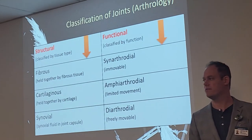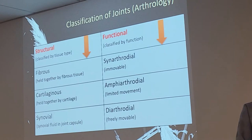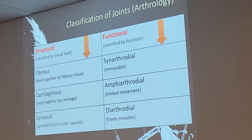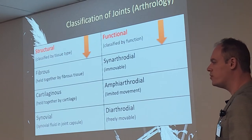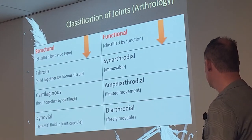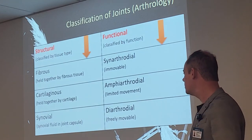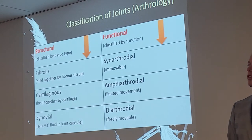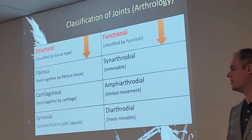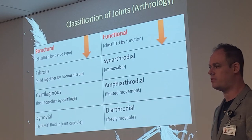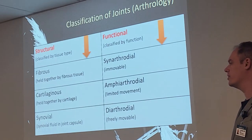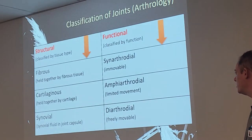Structure versus function — and within synovial joints we have all those subcategories: hinge joint, gliding joint, ball and socket. We'll review all those briefly as well. The appendicular skeleton is mostly synovial joints and mostly diarthrodial.